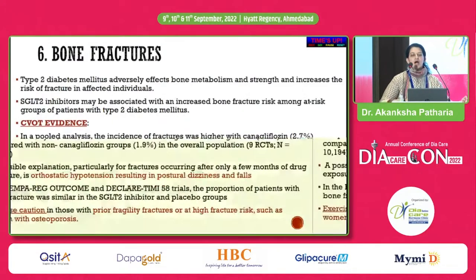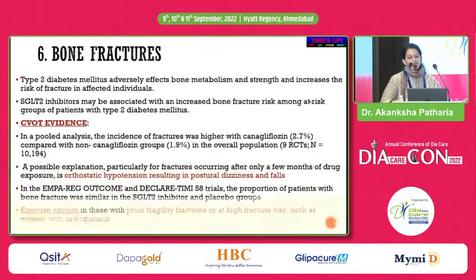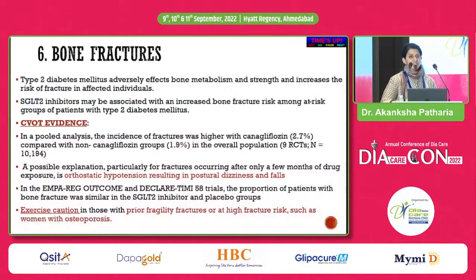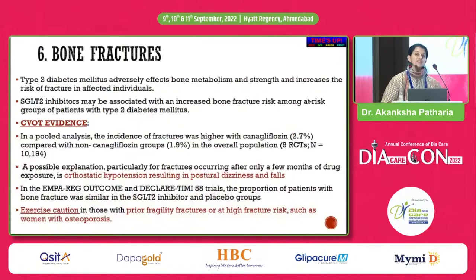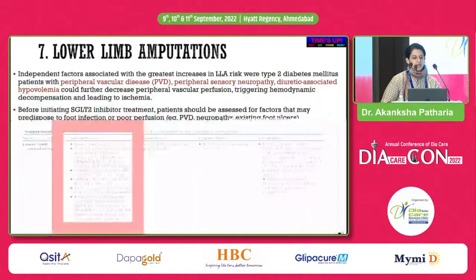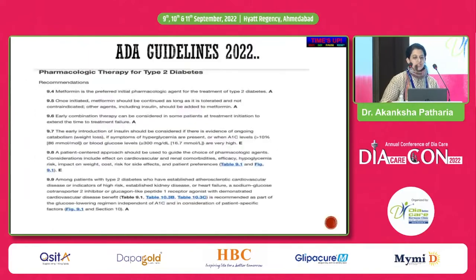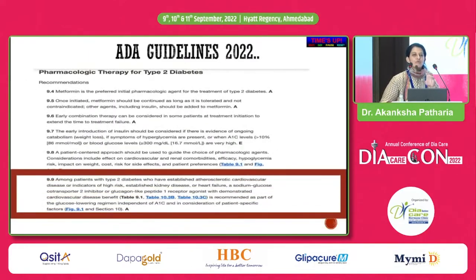Regarding bone fracture risk, multiple CVOTs showed it is not significantly high, but CANVAS proved otherwise — there was an increased risk due to orthostatic hypotension leading to fragility fractures, especially in post-menopausal females. Additionally, SGLT2 inhibitors in patients who are already lean can lead to sarcopenia, which is an important concern when considering this drug class.